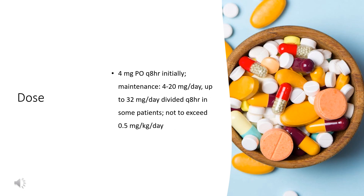Dose: For hypersensitivity reactions, 4 mg PO Q8HR initially; maintenance 4–20 mg per day, up to 32 mg per day divided Q8HR in some patients, not to exceed 0.5 mg per kg per day. For spasticity associated with spinal cord (off-label), 2–4 mg PO Q8HR initially, not to exceed 24 mg per day.